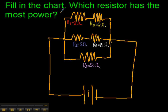Fill in the chart. Which resistor has the most power? I don't have the chart up yet, but basically this is like the big daddy of circuit problems where we want to know what the heck is going on with every single resistor - how much current it's got, how much voltage, the whole chalupa.